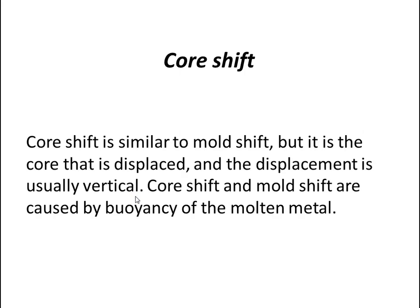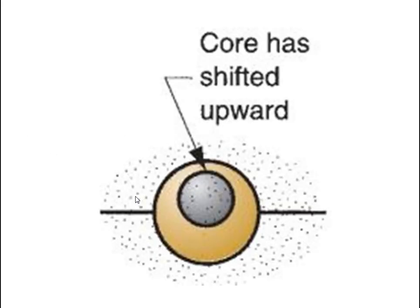Core shift is similar to mold shift, but it is the core that is displaced, and the displacement is usually vertical. Core shift and mold shift are both caused by the buoyancy of the molten metal. In the figure, the core has shifted upward.